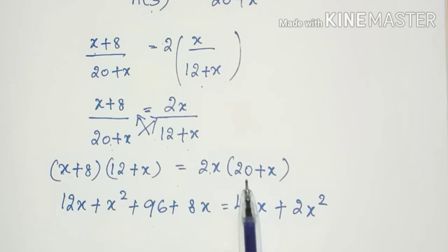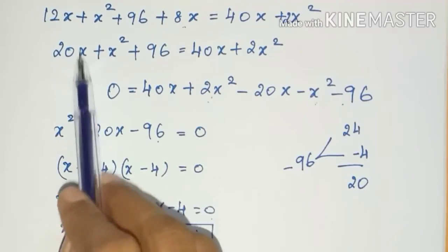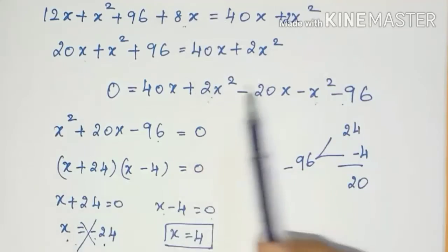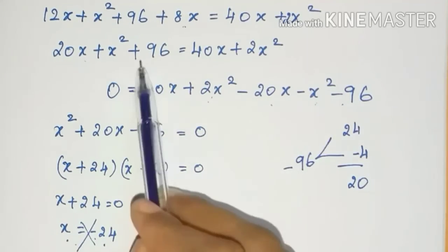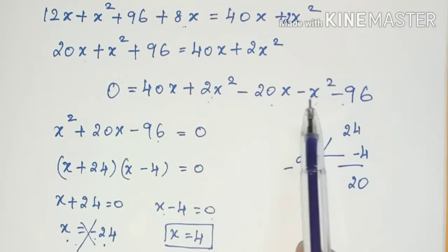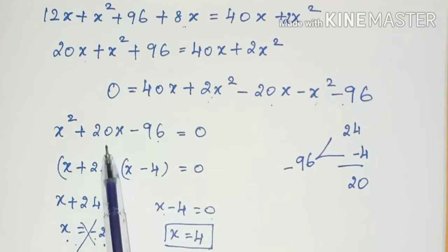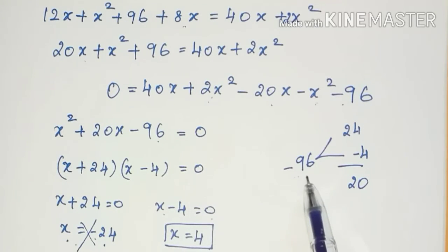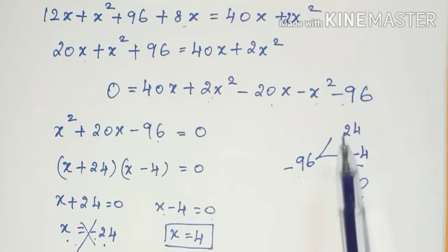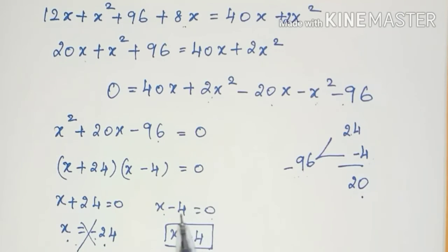Expanding: 12x + x squared + 96 + 8x equals 40x + 2x squared. Simplifying to x squared − 20x + 96 = 0. Using the sum-product method: 24 times 4 is 96, and minus 24 minus 4 is minus 20. So (x + 24)(x − 4) = 0, giving x = −24 or x = 4. Therefore x = 4.